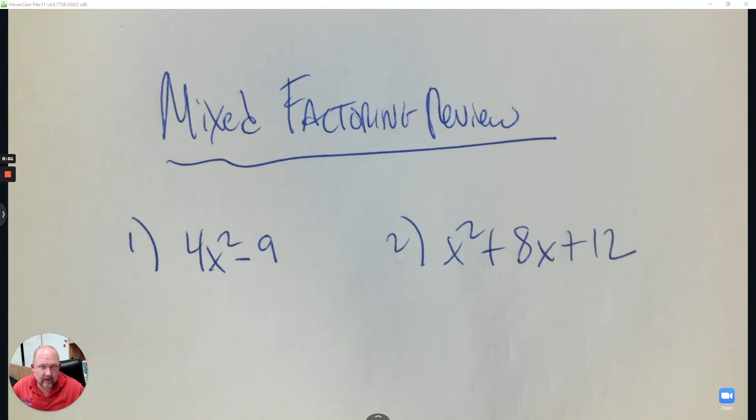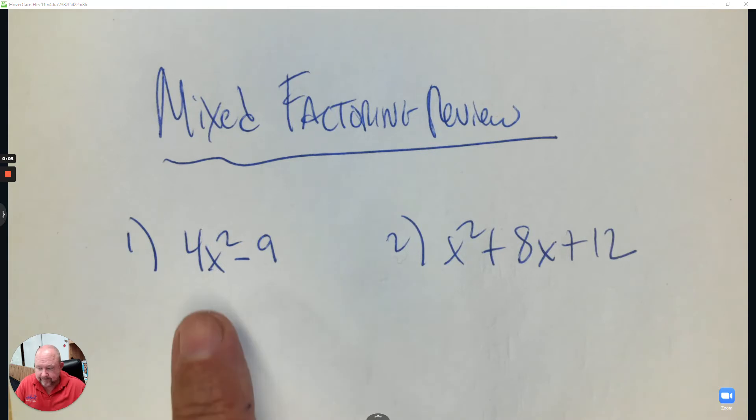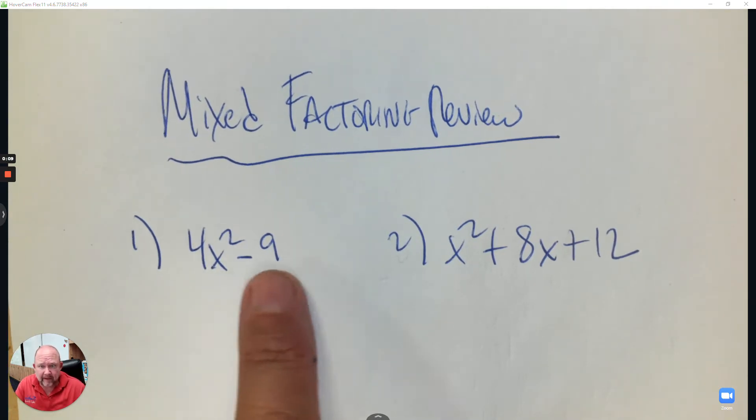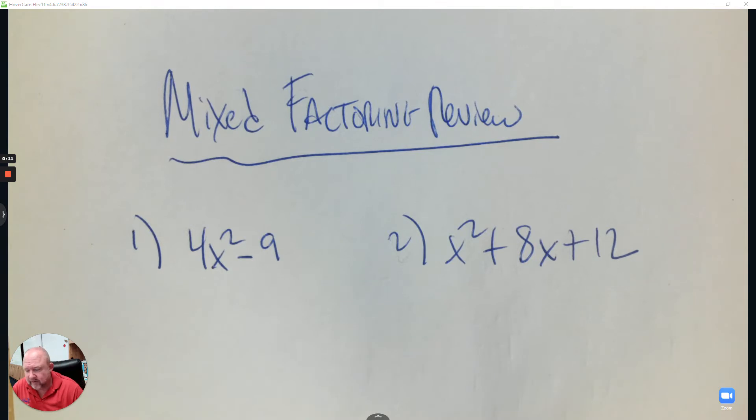All right, here's a review on mixed factoring, the different techniques that we've used so far. How would I factor number one? What do I notice? It's a binomial subtracting. This is a difference of squares.